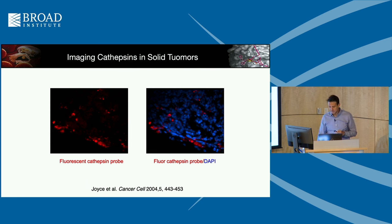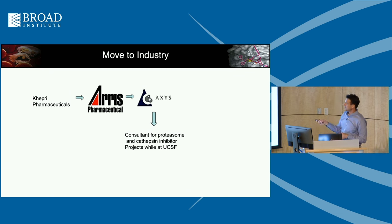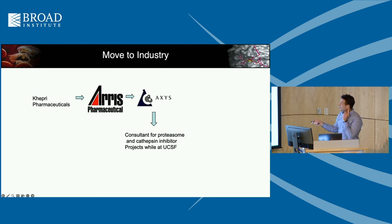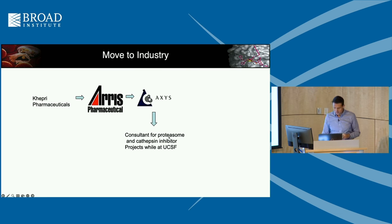I made a slight detour — while at UCSF, I was following Aris Pharmaceuticals, the company that came up with the vinyl sulfone strategy. They had been converted to Axis Pharmaceuticals in South San Francisco. They had me consulting for them on proteasome and cathepsin inhibitors. Then Axis was acquired by Celera in 2001 — Celera, the company that sequenced the human genome, which had decided to become a drug discovery company.